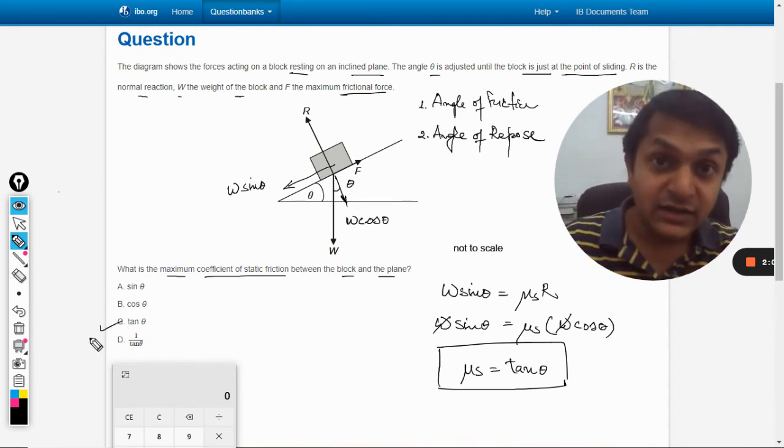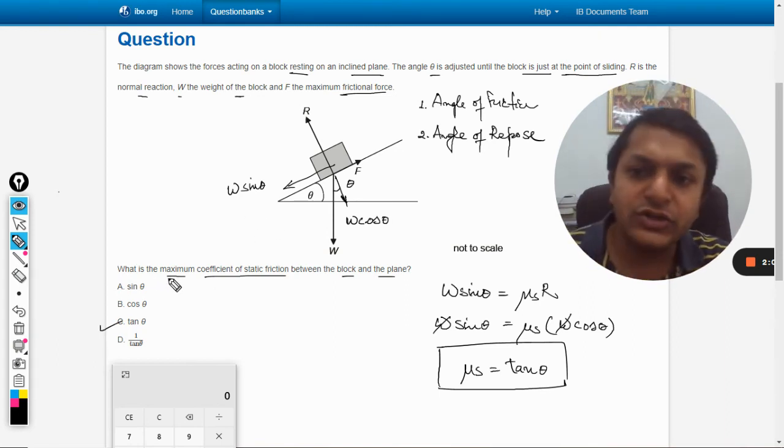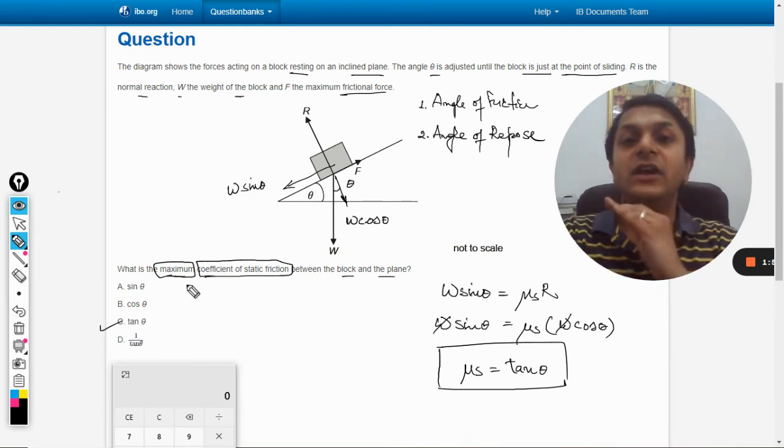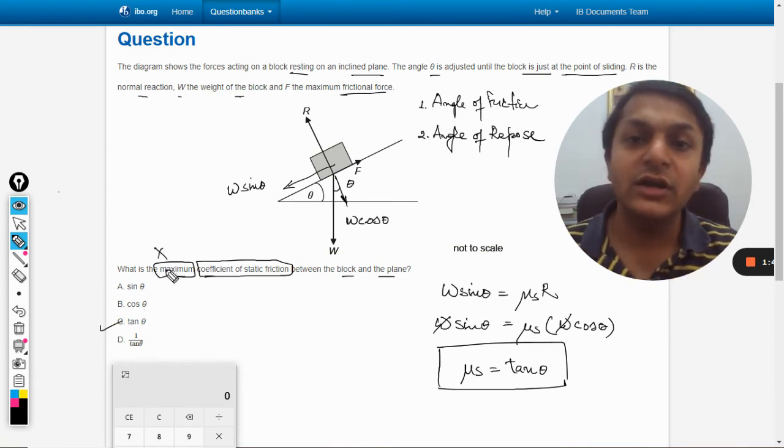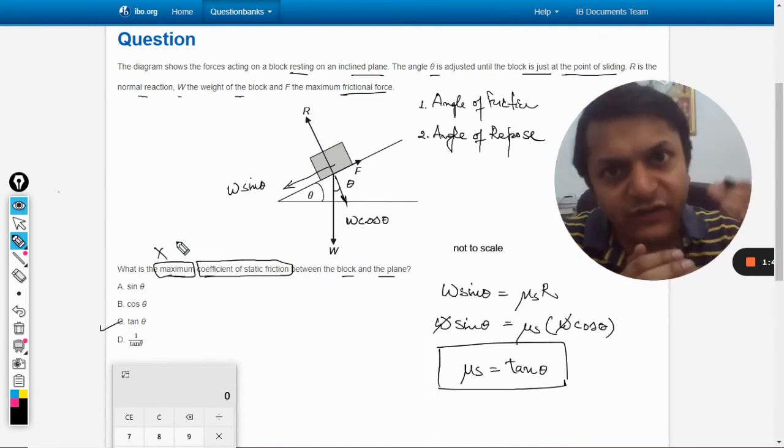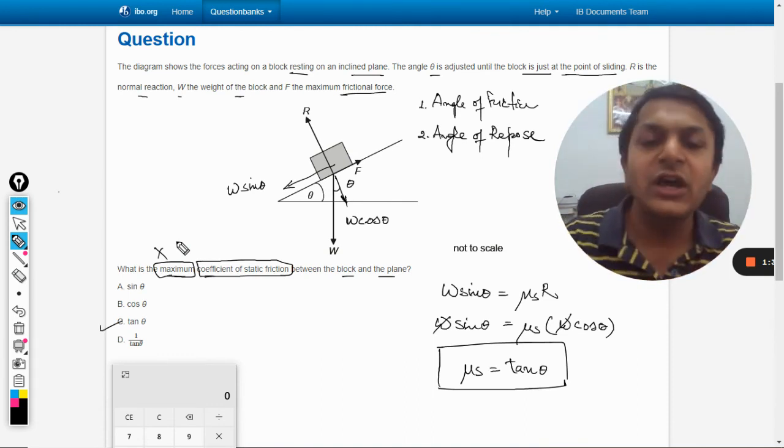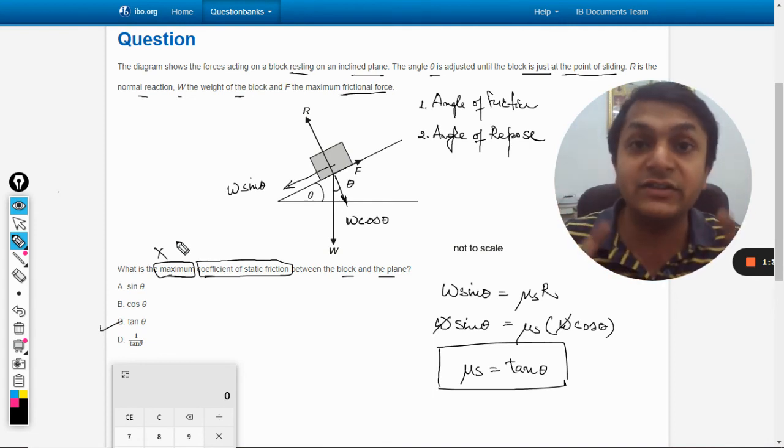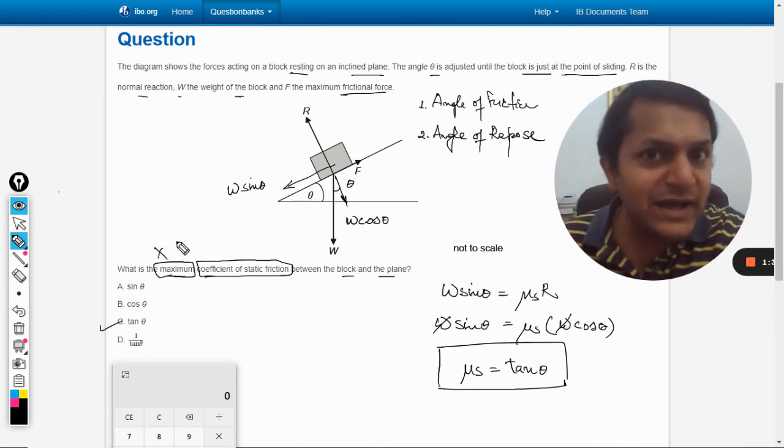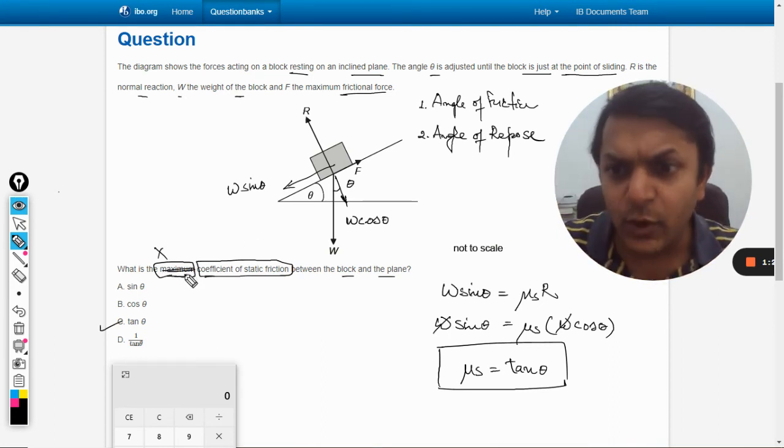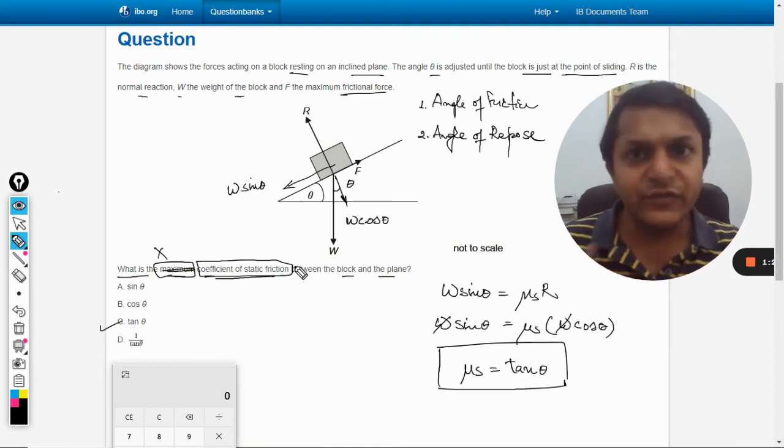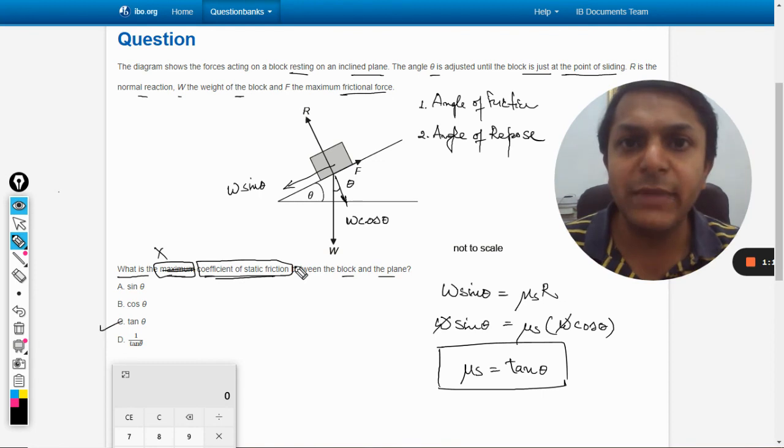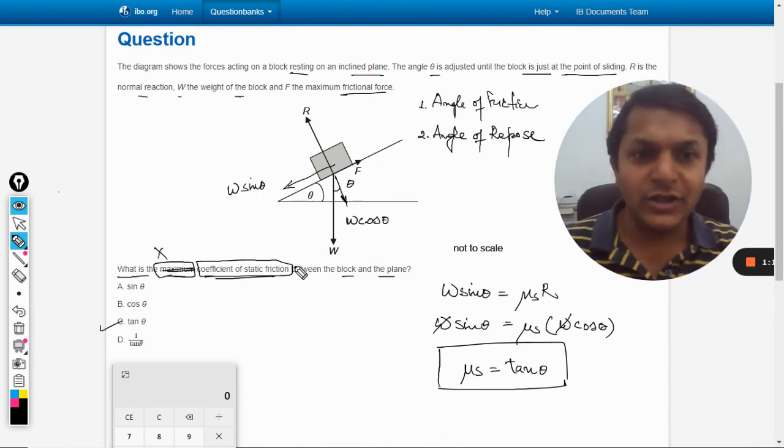There's one more thing I'd like to add - the question asks for the maximum coefficient of static friction. Well, by the way, there is no maximum or minimum. Coefficient of static friction is always constant. I think this question is wrong. The frictional force can be maximum or minimum with variation, but coefficient of static friction is always constant. You can't change it, so there's no question of asking maximum or minimum. The question should simply be: what is the coefficient of static friction between block and plane? That would be sufficient. I don't think this maximum word should be there. With this, all the best, bye.